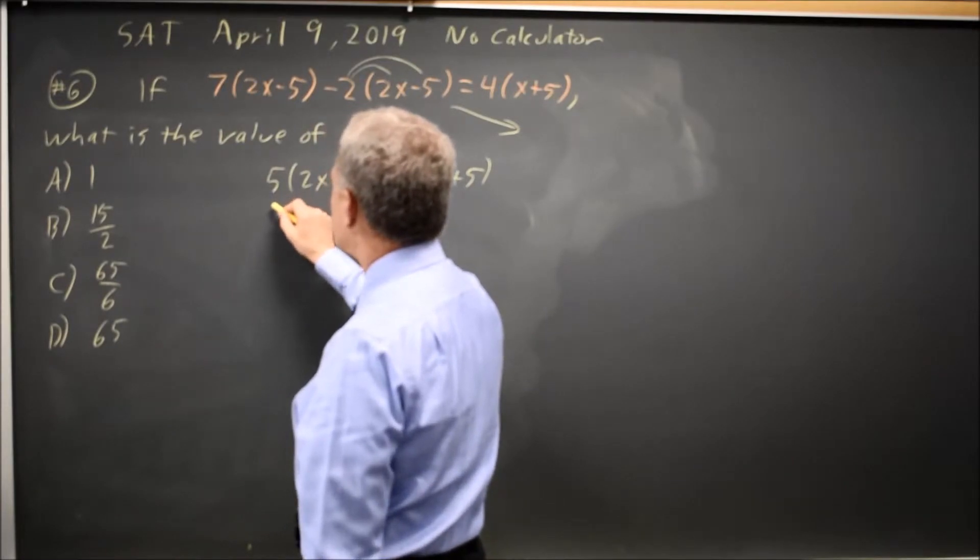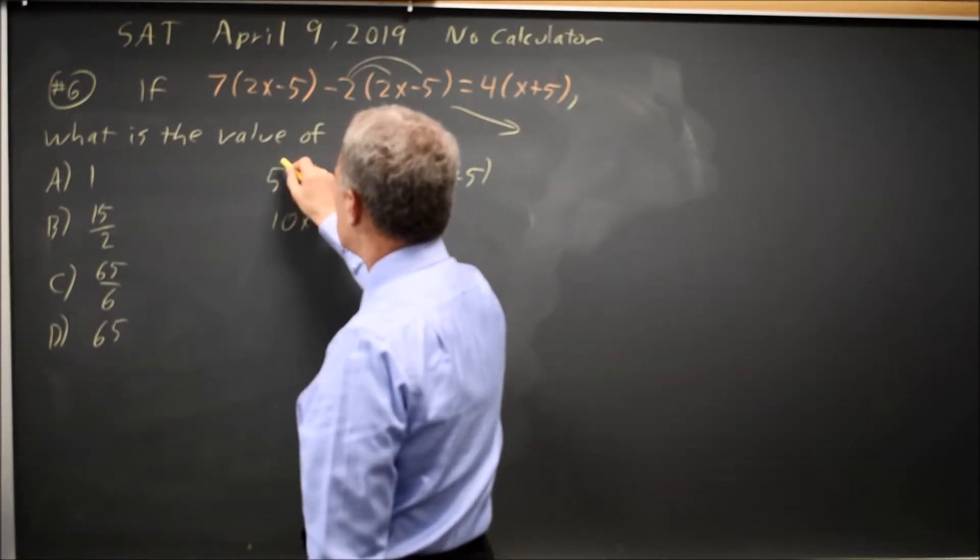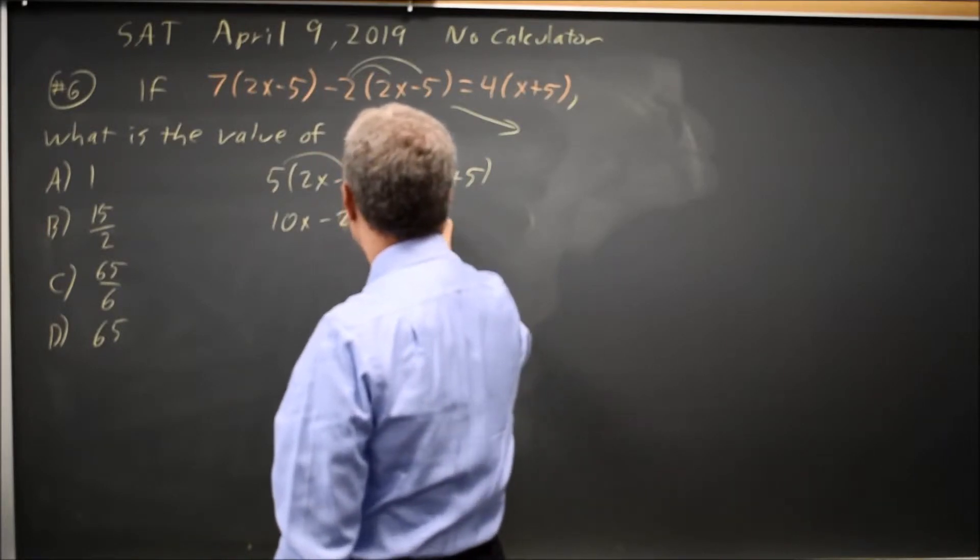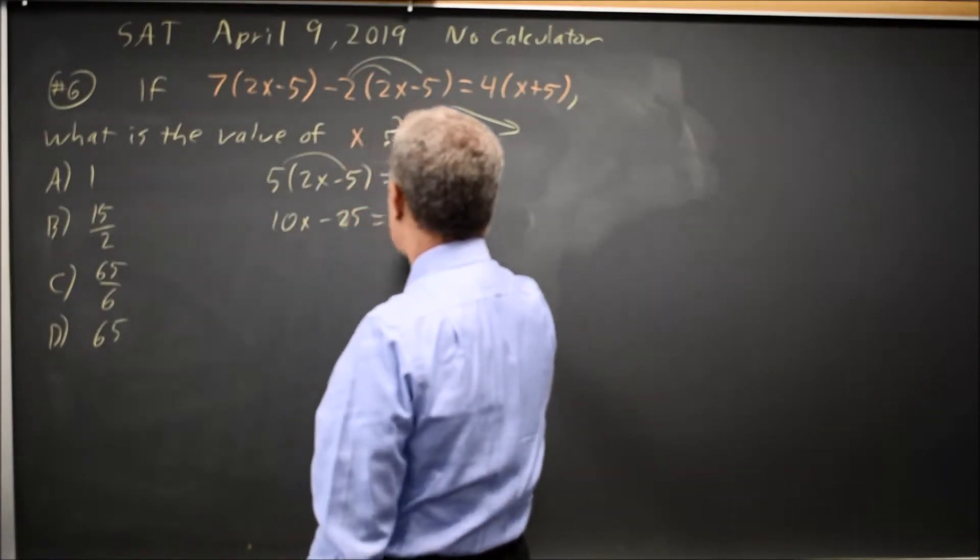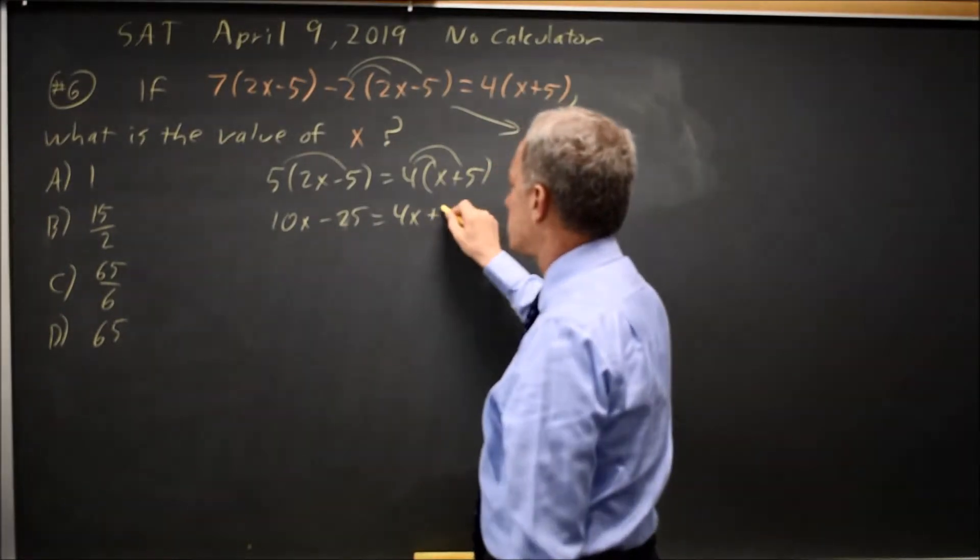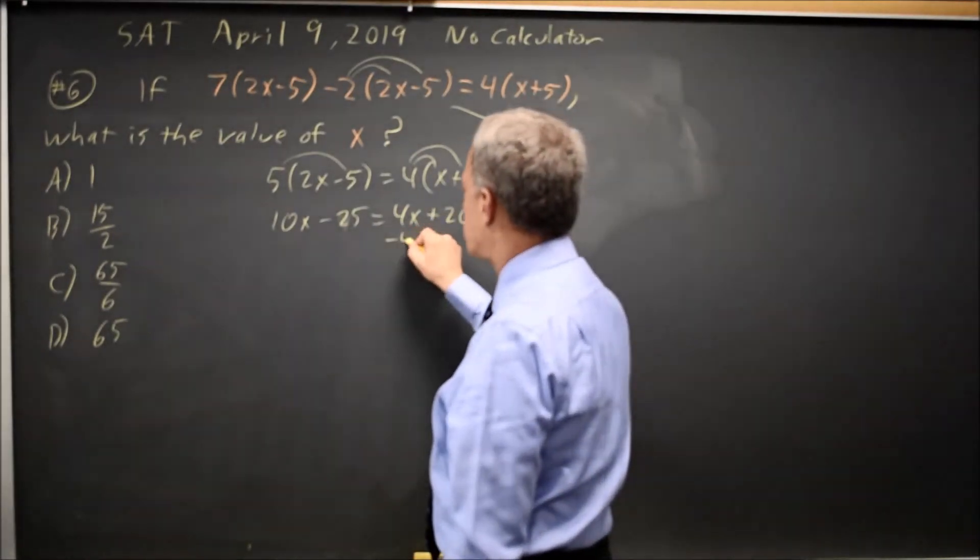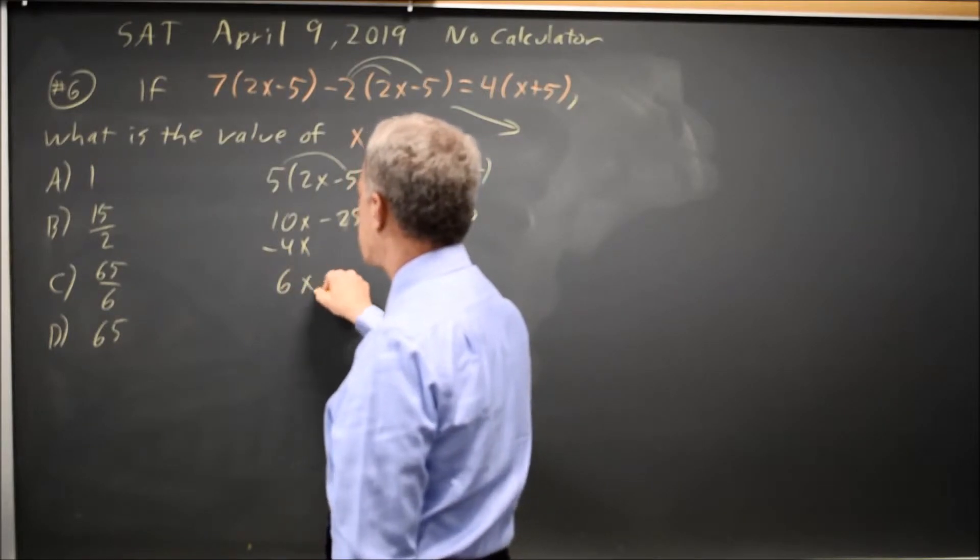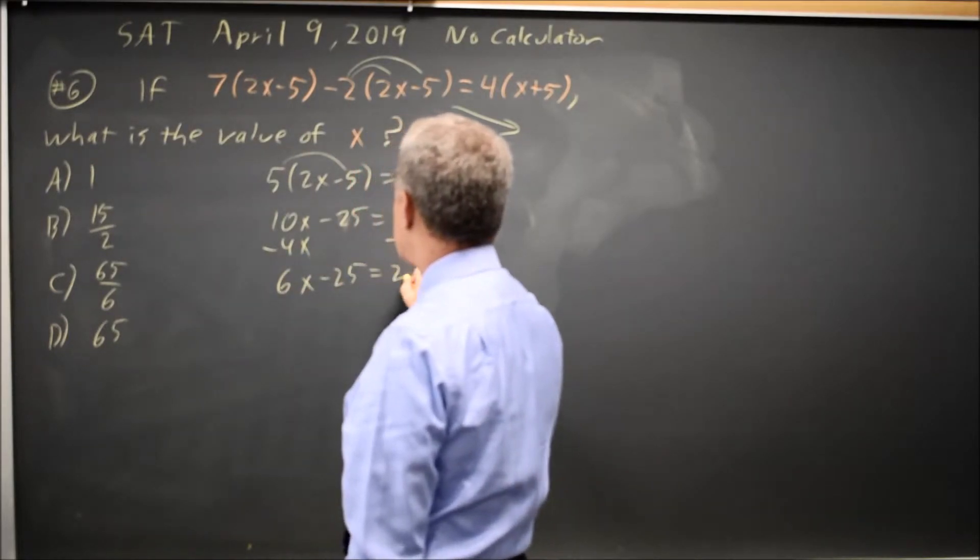Distributing now, I have 5 times 2x is 10x, 5 times negative 5 is minus 25, equals 4 times x is 4x, 4 times 5 is plus 20. Collecting similar terms, subtract 4x from both sides, and that leaves with 6x minus 25 equals 20.